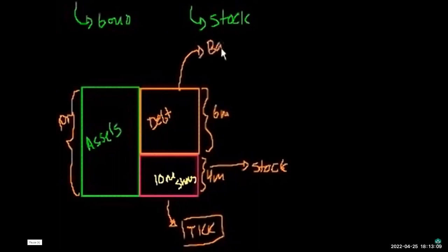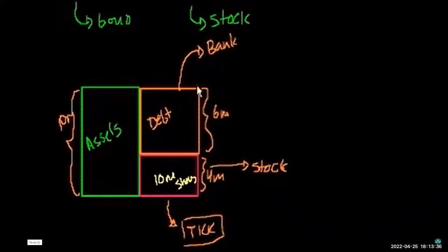A bank loan may require you to pay interest for five years, and at the end of those five years also pay back the full $6 million principal — so you may have to come up with a new loan. There are also revolving lines of credit, kind of like a company's credit card. But the one people always talk about alongside equity is bonds.